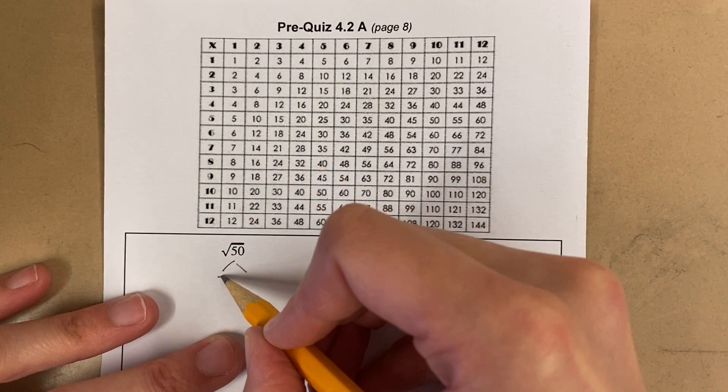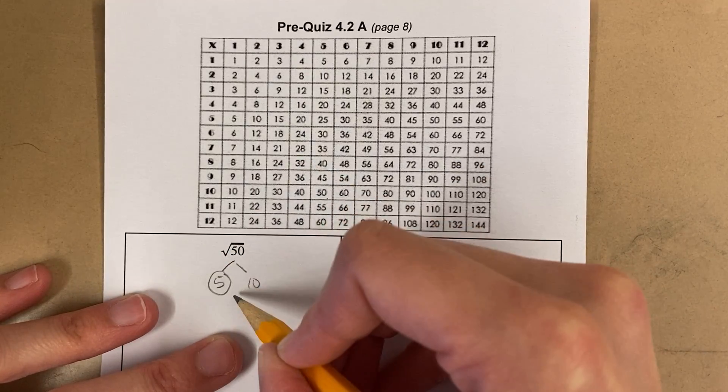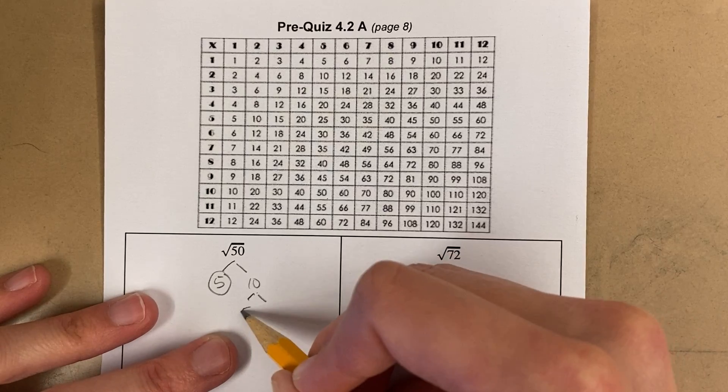It's right here, right? 5 times 10 is 50. 5 is prime. And I'm looking to factor 10. 10 is 5 times 2.